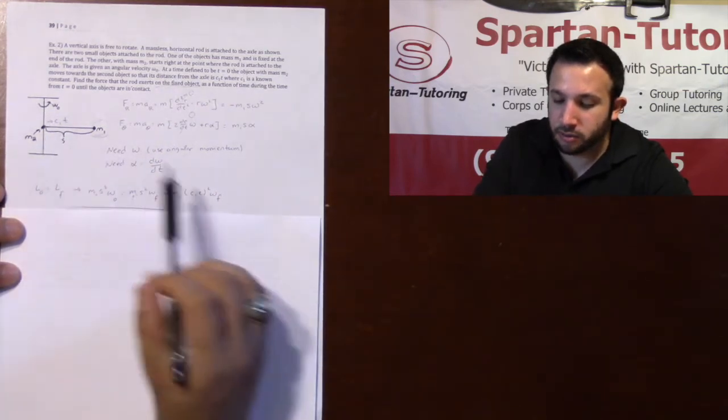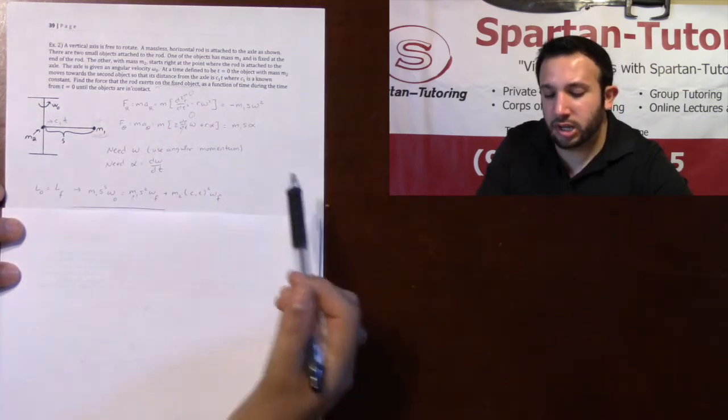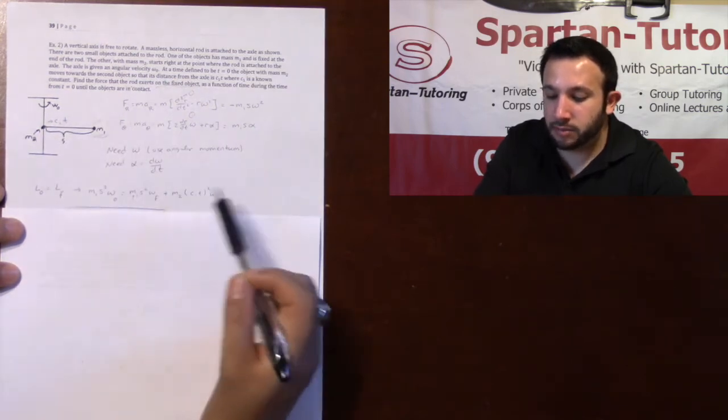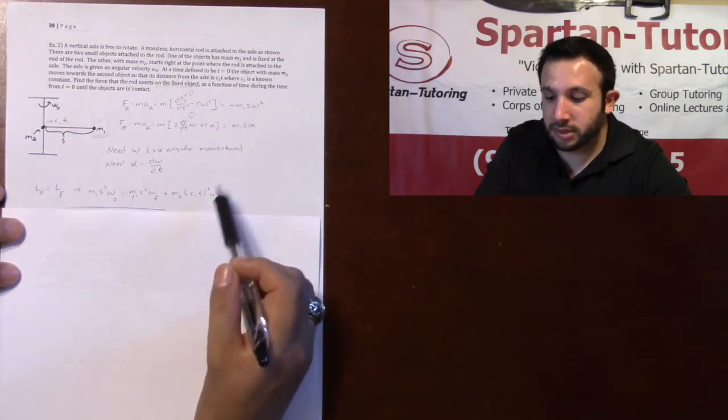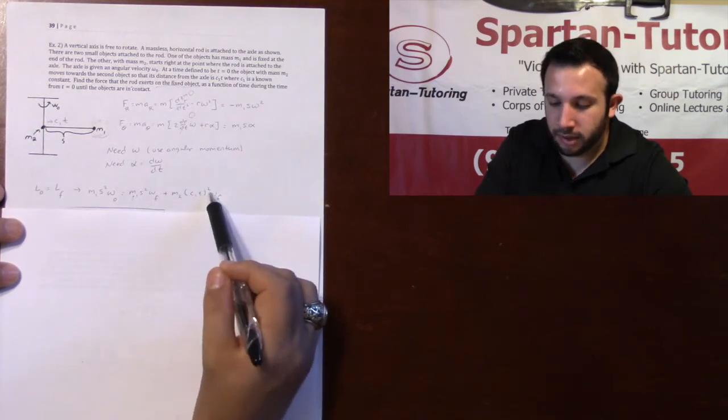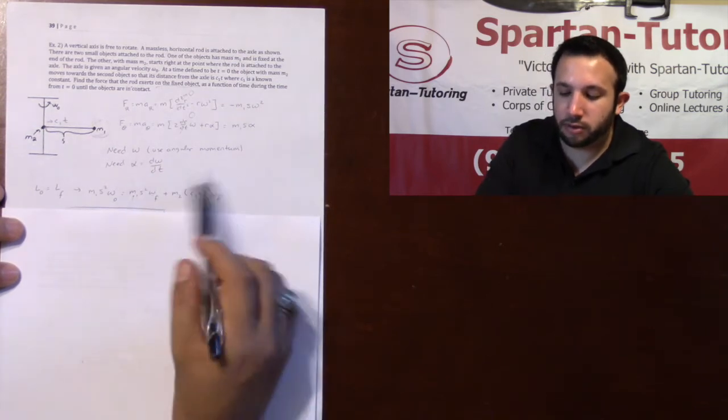For mass 2, its radius is changing at a rate of c1t. So, it would be m2 times the c1t squared, omega f. You factor out the omega f and divide.